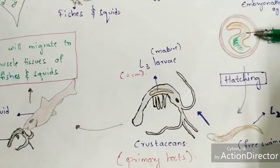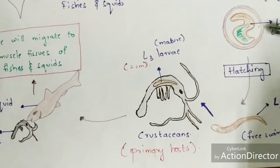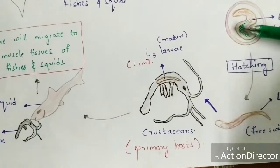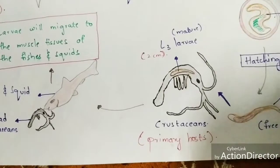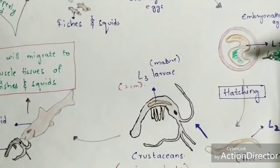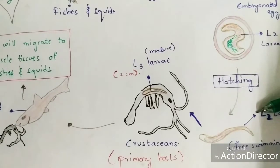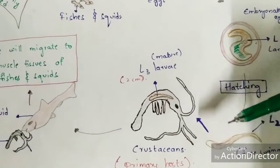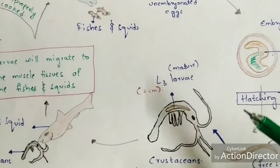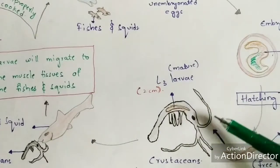The next step is hatching - the L2 larva present inside the embryonated egg comes out and is released. All of this process occurs in water, such as oceans, lakes, or ponds. When hatching occurs, the L2 larva exits and exhibits free-swimming behavior.